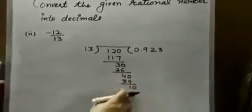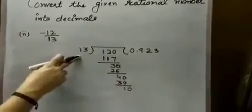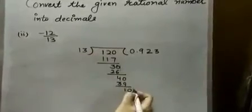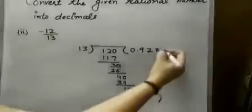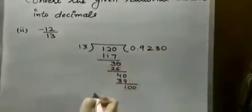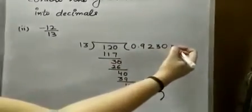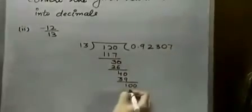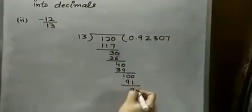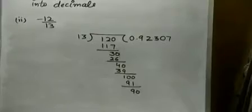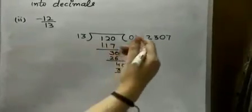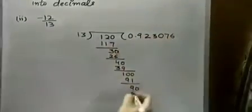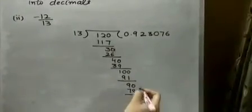1, 1, 0 will come. But, again the 10 is not divisible by 13. 10 is smaller than 13. So, we need one more 0 here. We are going to place 0 in the quotient. Then, 13, 7's are 91. 13, 6's are 78. 2, 1, 120.